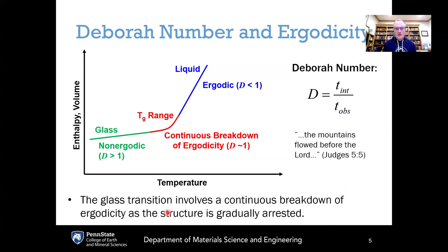One of the concepts used to understand ergodicity is the Deborah number. This goes back to a paper in Physics Today published by Reiner, back in the 1950s. The Deborah number, capital D, is defined as the ratio of some internal relaxation time — a natural timescale on which kinetics occur within the system — in the numerator, to an external observation timescale — the timescale on which you're performing the measurement or observing the system — in the denominator.